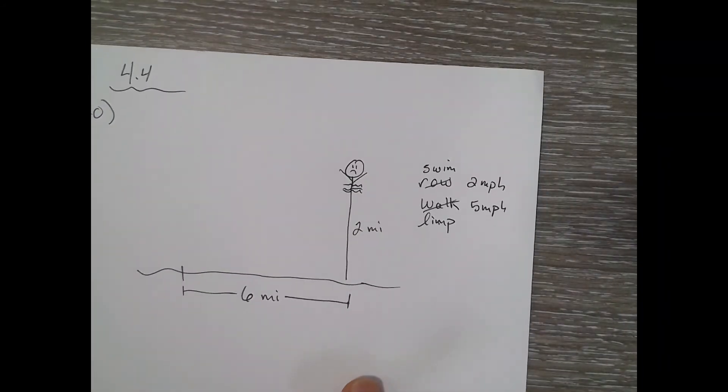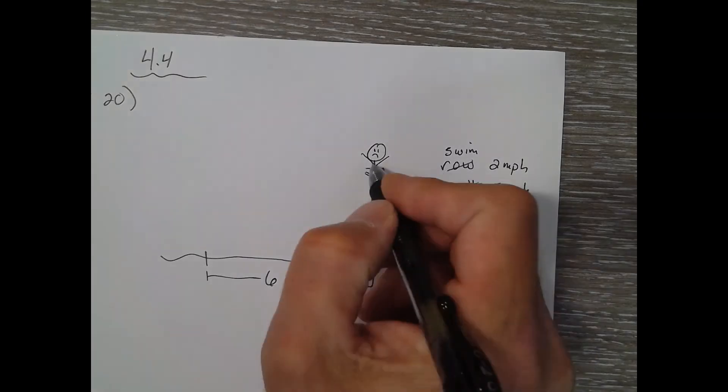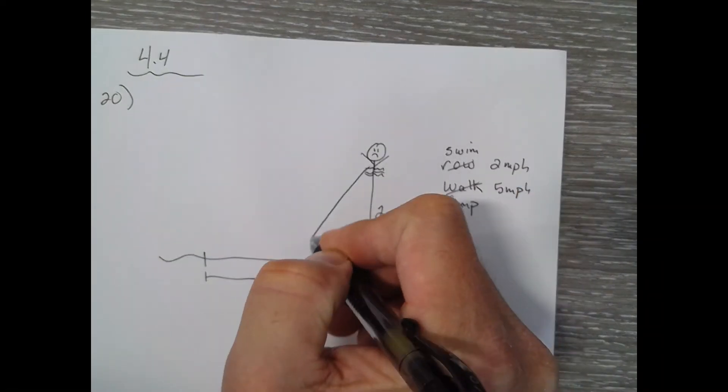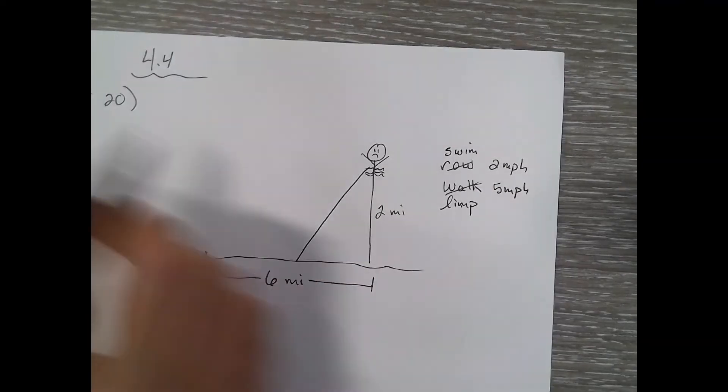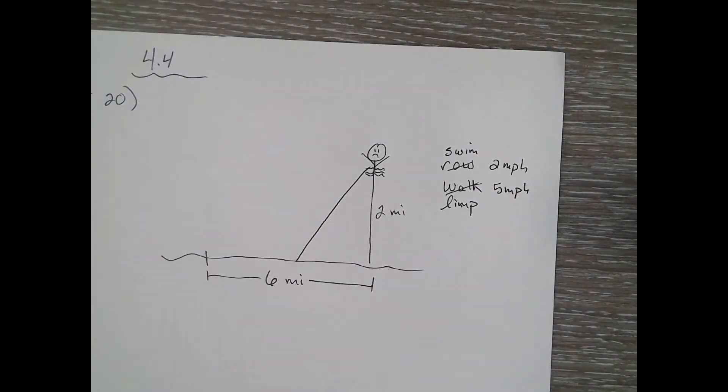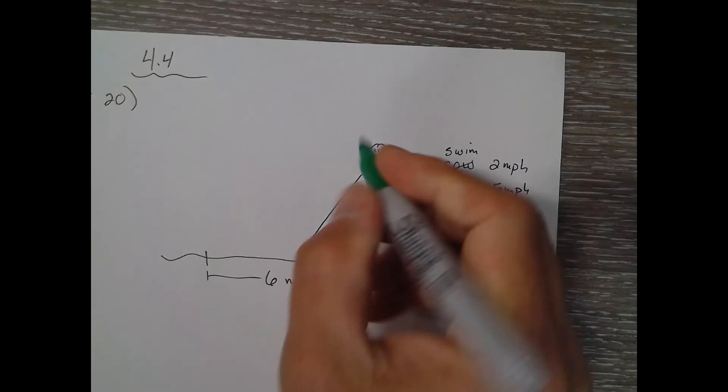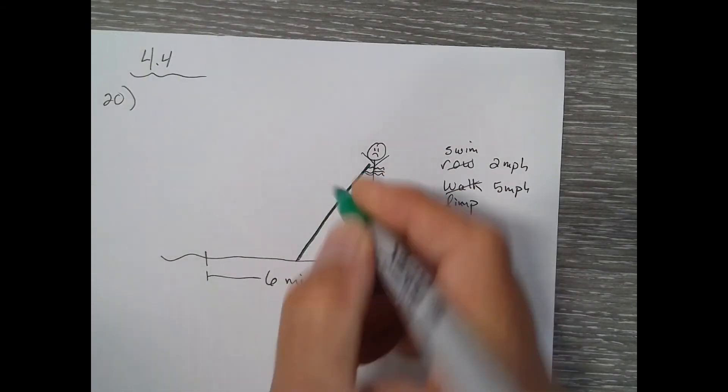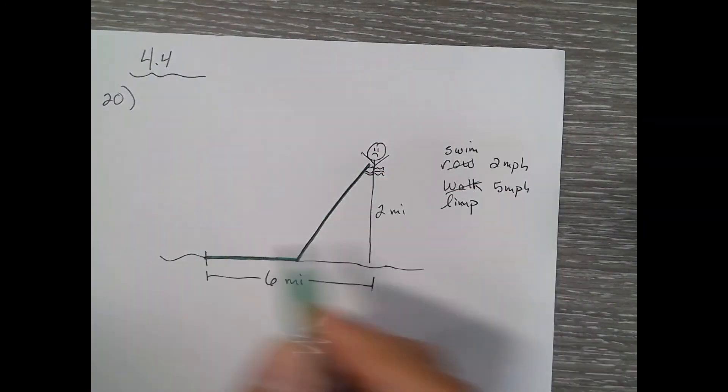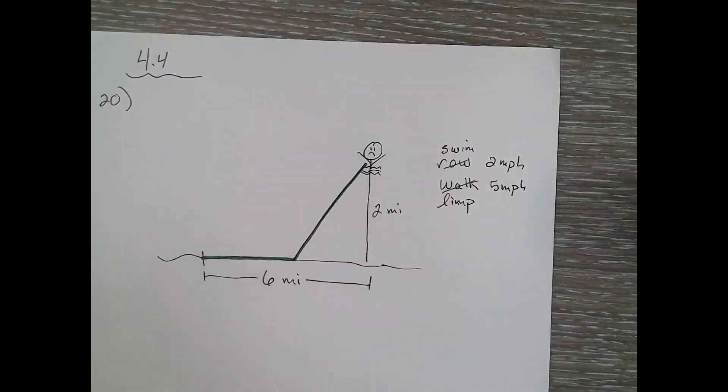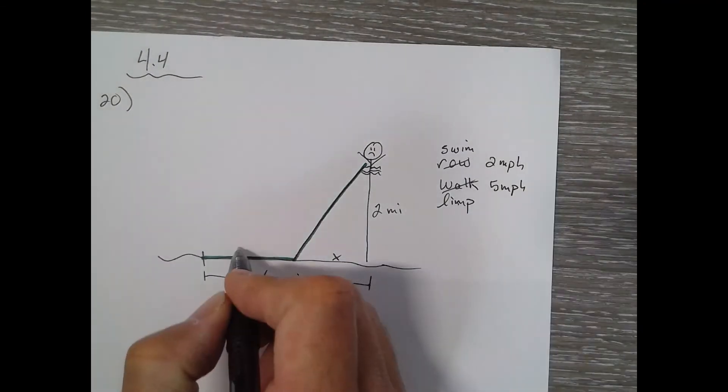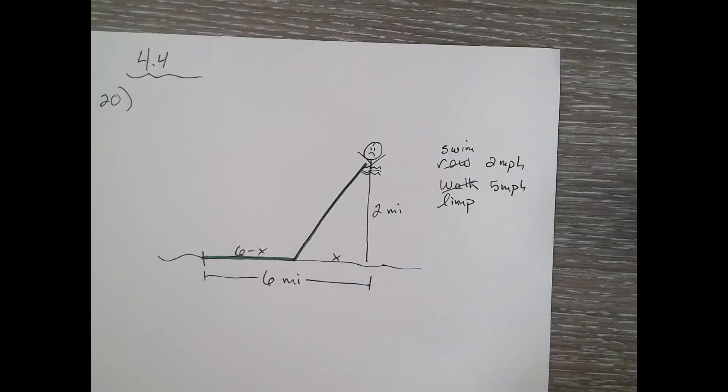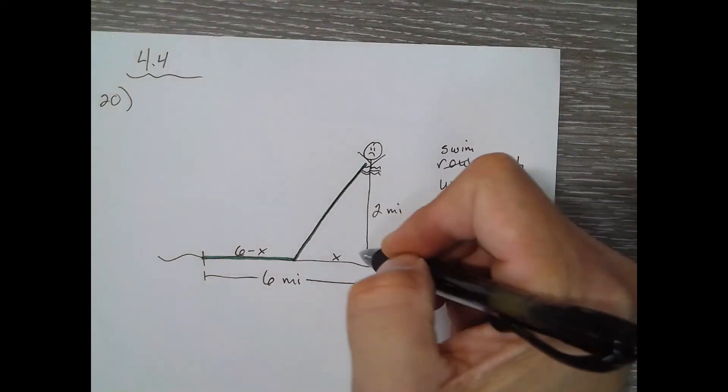Back to Jane, who just lost some precious time because of the dog scenario. She's going to go somewhere in the middle and then go there. So the path that Jane will travel is swimming while bleeding, limping on shore. I will call this x, which would mean this would be 6 minus x.